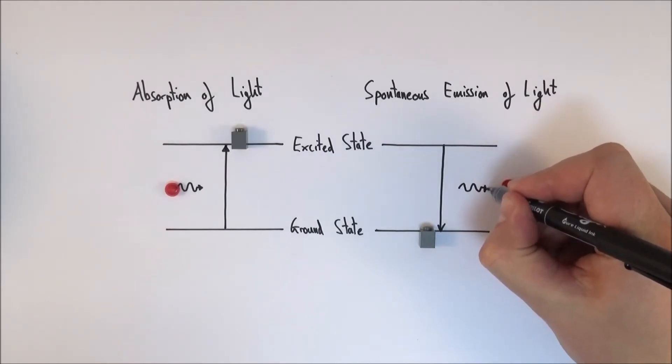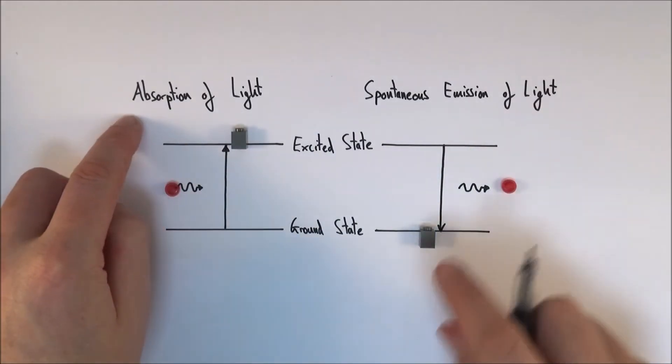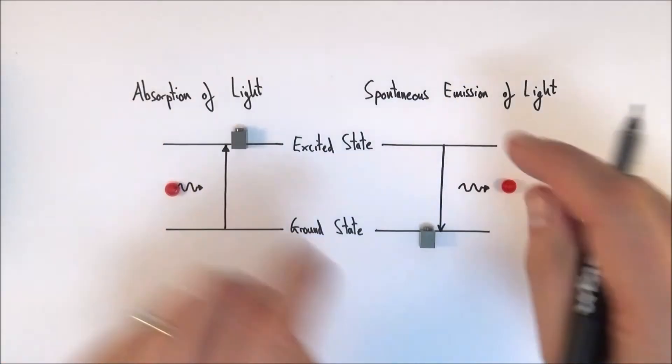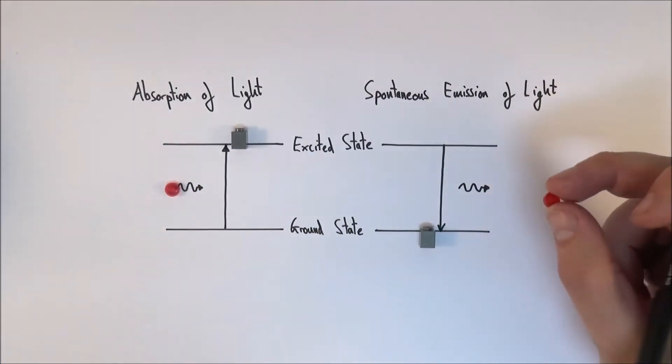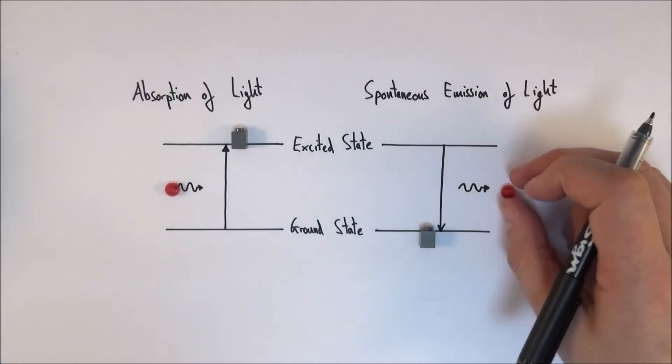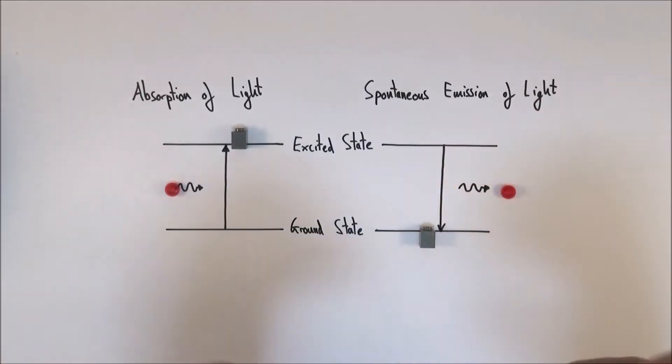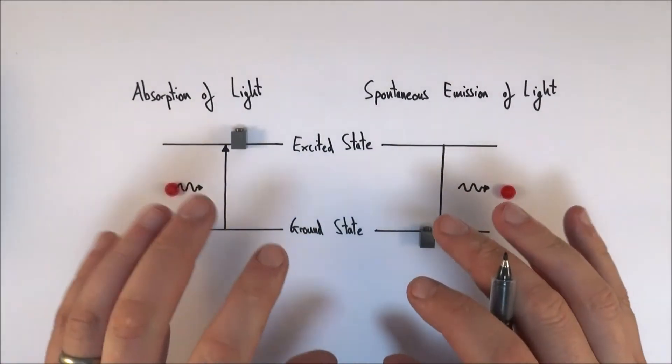Basically you can think of these as being the opposite things: absorption of light and then the spontaneous emission of light. And the color of light that's given off, or the kind of energy of the photon, depends upon this energy gap. And it can't be anything else. So these are the first two processes.